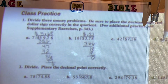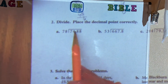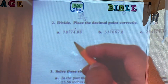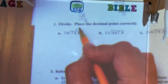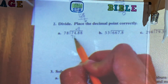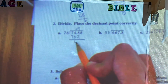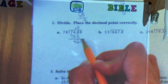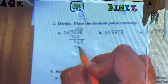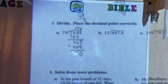On number 2, letter A, it says 78 divided into 74.88. Make sure that the decimal point — bring it up. Here the first digit is going to be 9. 9 times 78 is 702. When we subtract 748 minus 702, that's going to be 46 — bring down the 8 to get 468. 468 into 78 is going to be 6 times. So 6 times 78 is 468, and that gives no remainder.